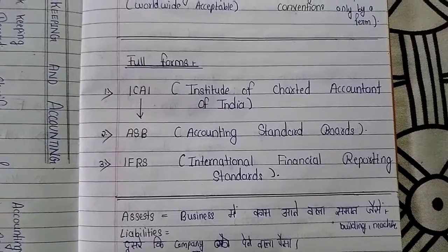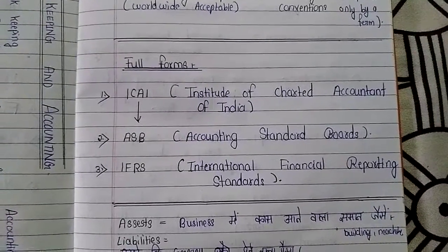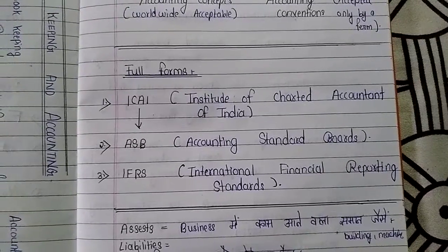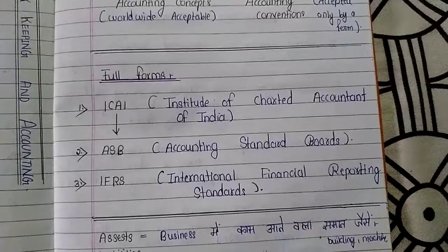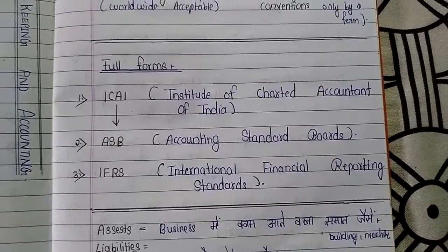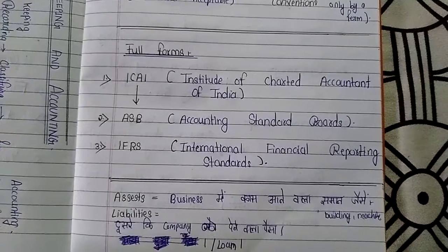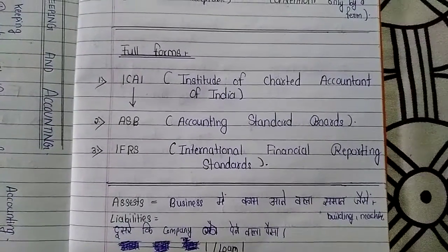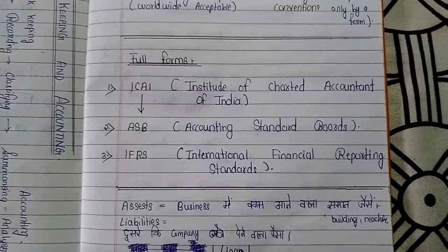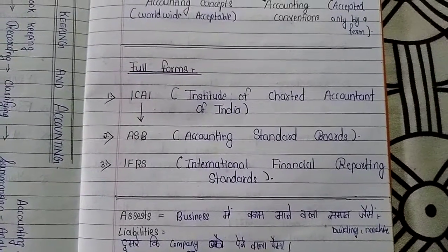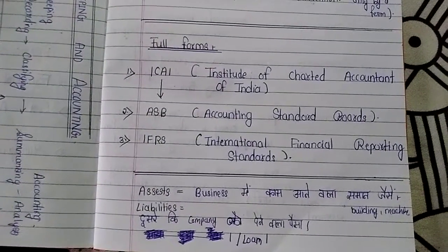I have written some full forms here which you should know. First is ICAI — Institute of Chartered Accountants of India. Second is ASB, which means Accounting Standards Board. Third is IFRS, which stands for International Financial Reporting Standards.